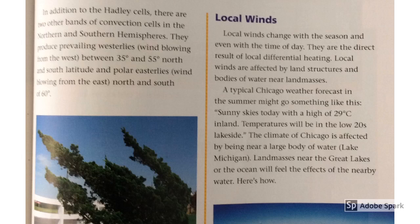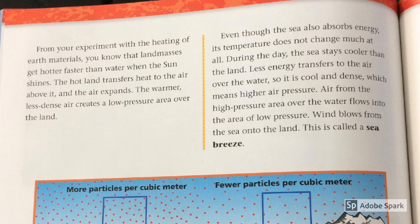A typical Chicago weather forecast in summer might go something like this: sunny skies with a high of 29 degrees Celsius inland, and temperatures in the low 20s lakeside. The climate of Chicago is affected by being near a large body of water. From your experiment with the heating of Earth materials, you know that land masses get hotter faster than water when the sun shines. The hot land transfers heat to the air above it, which expands. The warmer, less dense air creates a low-pressure area over the land. The sea temperature does not change much, so the air over the water stays cool and dense — higher air pressure. Air from the high-pressure area over the water flows to the low-pressure area over land. This is called a sea breeze.